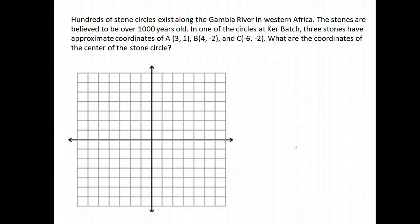Here's a real life example. Hundreds of stone circles exist along the Gambia River in western Africa. The stones are believed to be a thousand years old. In one of the circles at Ker Batch, three stones have approximate coordinates of (3,1), (4,-2), and (-6,-2).